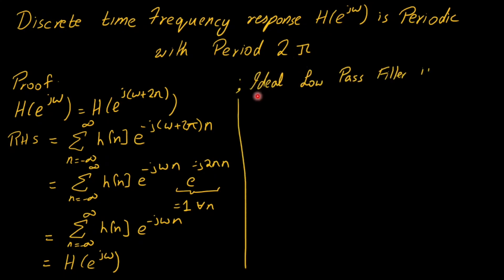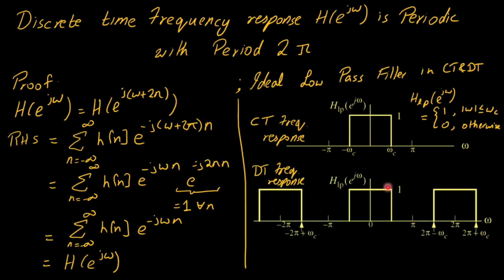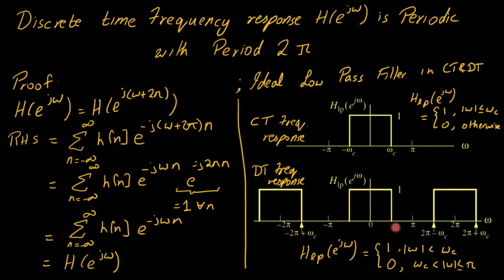To illustrate, consider an ideal low pass filter in both continuous and discrete time. In continuous time, the frequency response h_lp equals one for omega between minus omega c and omega c, and zero toward infinity. In discrete time, it similarly equals one between minus omega c and omega c and zero until pi, but crucially the entire frequency response from minus pi to pi repeats periodically — from pi to 3 pi, 3 pi to 5 pi, and so on — reflecting the 2 pi periodicity of discrete time frequency responses.